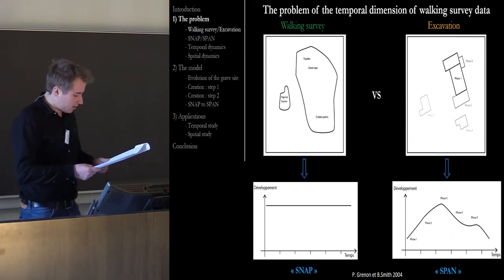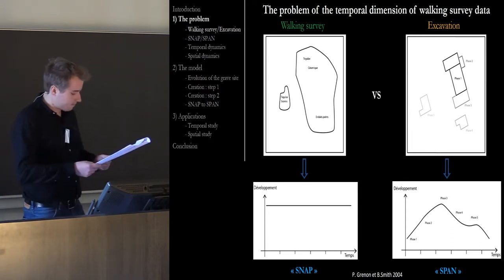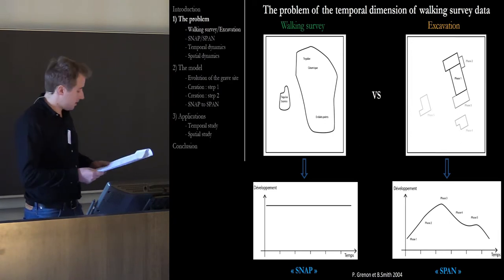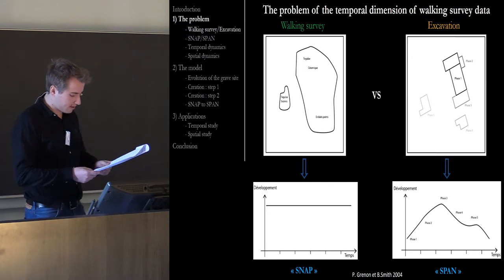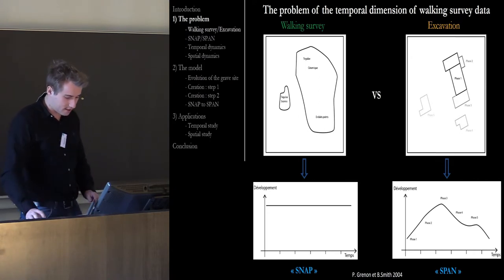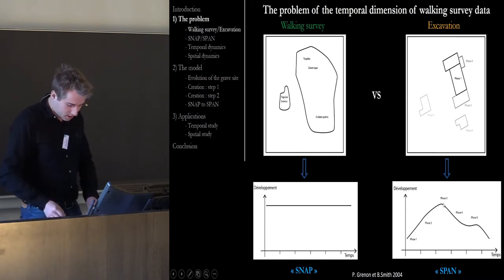We can see the walking survey data like SNAP entities. It is thus not possible to read exactly, unlike excavation data which are SPAN entities, the varied stages of the story of sites: creation, expansion, peak, diverse functions in time, decline and abandonment.